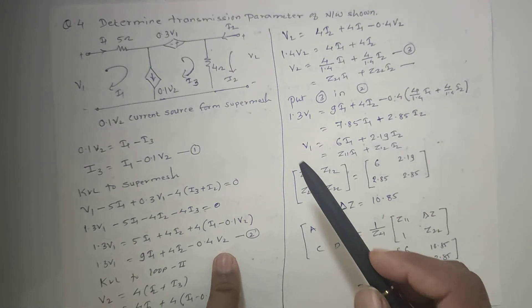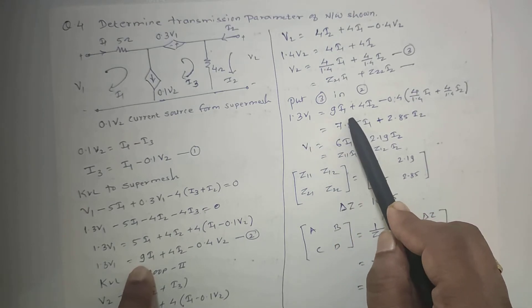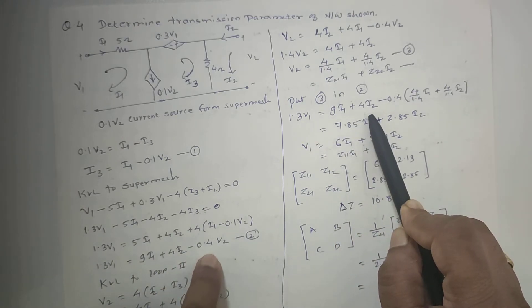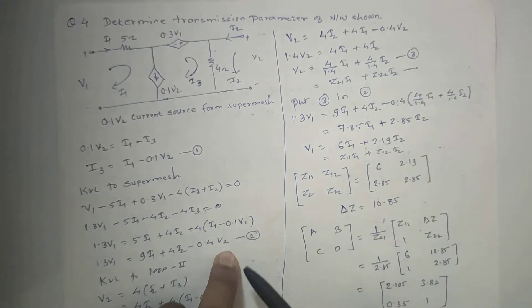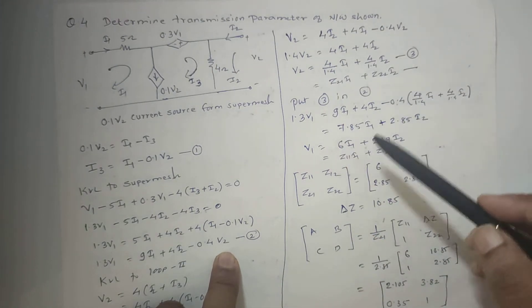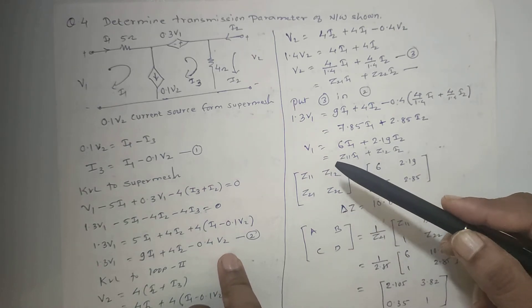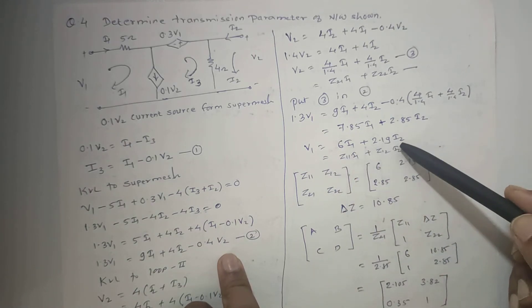We will get V1 in terms of I1, I2. So 1.3V1 equals 9I1 plus 4I2 minus 0.4V2. V2 is from equation 3. If we simplify it, we get V1 equals 6I1 plus 2.19I2.